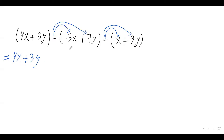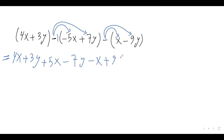So negative times negative 5x, that's positive 5x. Negative 1 times 7y is just negative 7y. And then over here, negative times x is just negative x. And negative times negative 9y is just positive 9y. Now we need to collect like terms: 4x, 5x, and negative x are like terms. And 3y, negative 7y, and 9y are like terms as well.